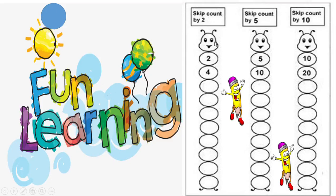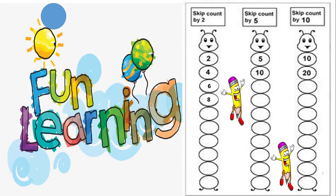Here, we have some numbers missing and you are going to say the missing numbers, or you are going to repeat after teacher. Are you ready? Let's begin with skip count by 2s. Here we have 2, 4. What comes next? Very good. 6 and then 8, 10, 12, 14, 16, 18, 20. Very good children.